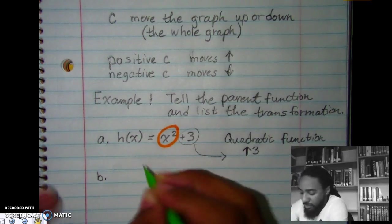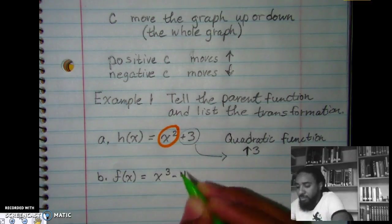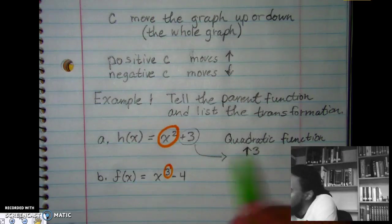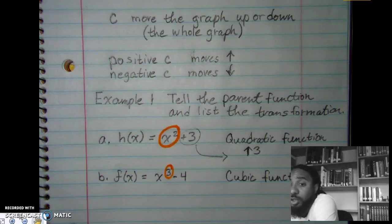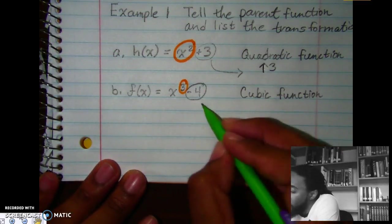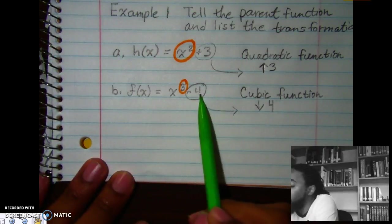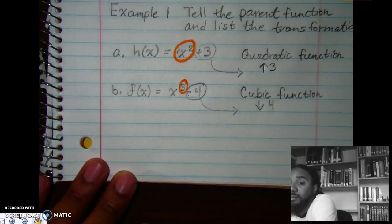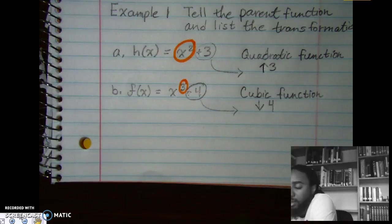For part B, we have x³ - 4. The exponent tells you what function we're dealing with — x to the third power is the cubic function. For the transformation, the negative tells us to go down and the 4 tells us how far. So don't write 'negative four' or 'positive three' — just write 'down 4' or 'up 3'.